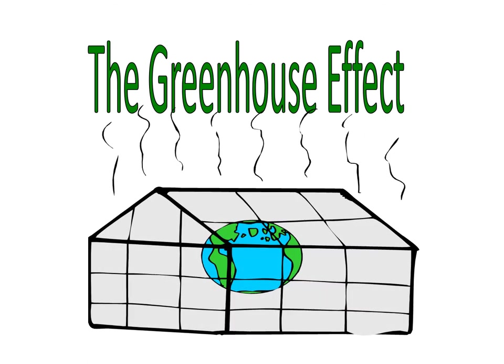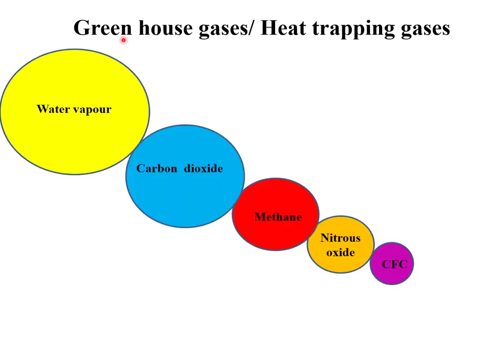They are called greenhouse gases or heat-wrapping gases. The greenhouse gases include: water vapor, carbon dioxide, methane, nitrous oxide, halogenated gas, and CFCs.